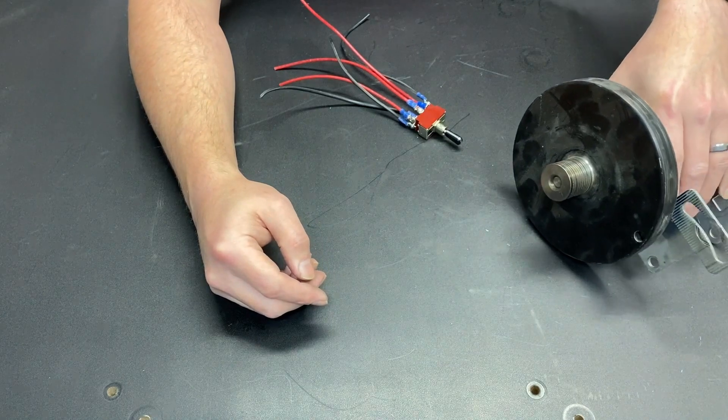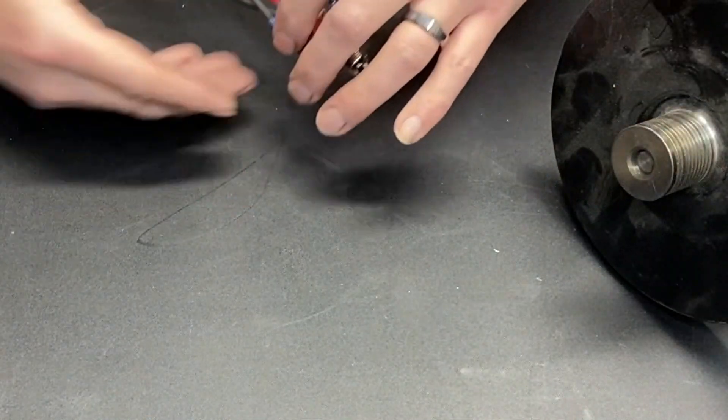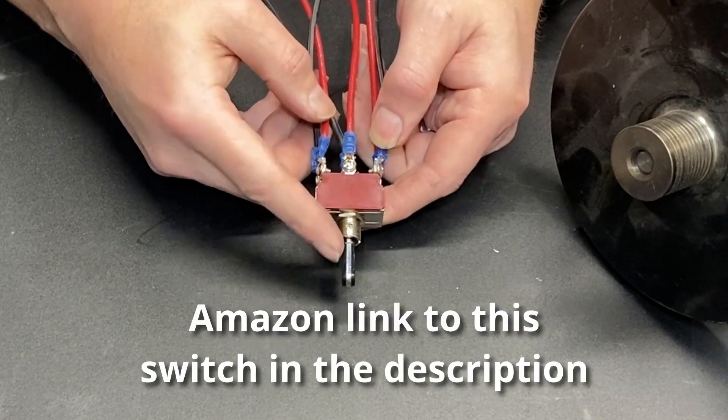Now that we've determined our motor works in reverse, how do we actually wire it? Well, this right here is a double-pole, double-throw switch, center-off.